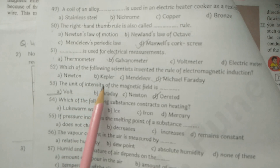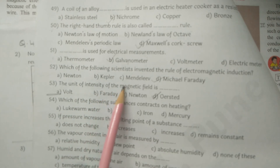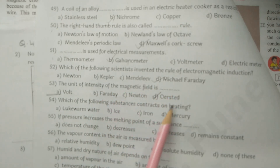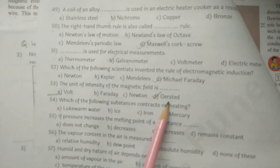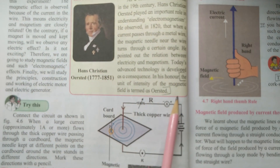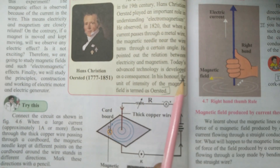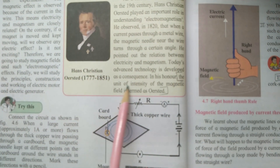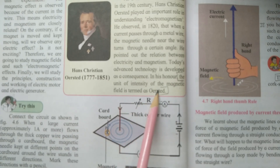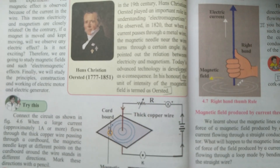Q53: Fill up - the last MCQ of lesson number 4. The unit of intensity of the magnetic field is dash. The answer is Tesla (A-stud), given on page number 52. The unit of intensity of the magnetic field is termed as Tesla.